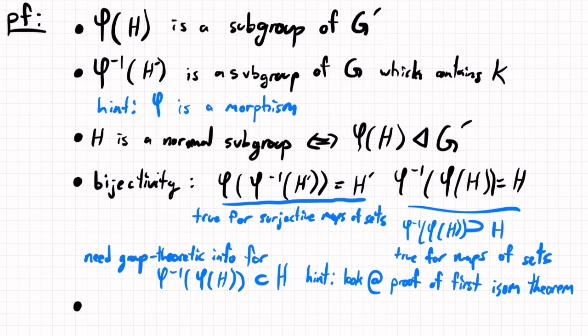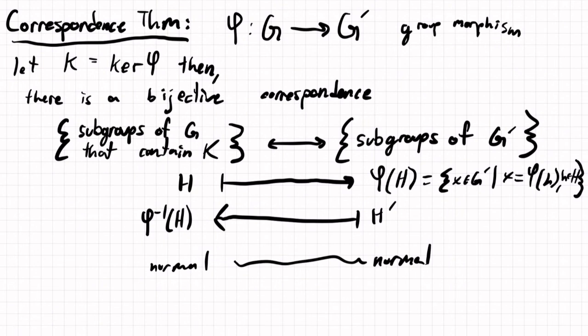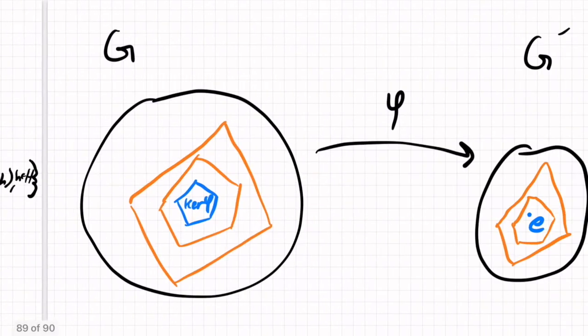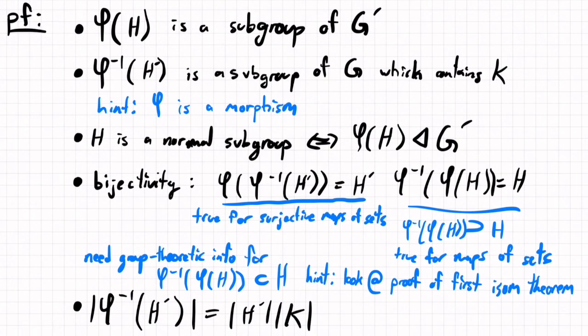The first isomorphism theorem has a similar idea to the proof of this part. And then, finally, the last thing to verify will be that the order of phi inverse of H prime equals the order of H prime times the order of k. And so that will correspond to the fact that, in our correspondence here, the order of H will be equal to the order of phi of H times the order of k. And the hint for this one is the counting formula. The counting formula should be used in the proof of this last part.